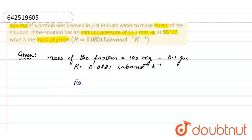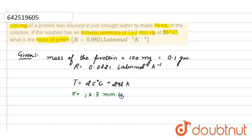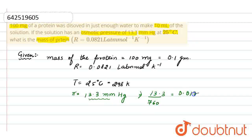The temperature is 25 degree Celsius, that is 298 kelvin. And the osmotic pressure is 13.3 mm of Hg. We need osmotic pressure in atmospheric, so that is 13.3 divided by 760, which gives 0.0175 atmospheric.